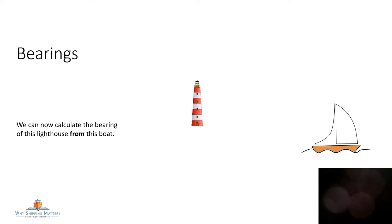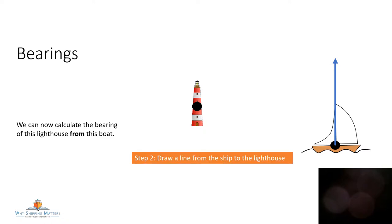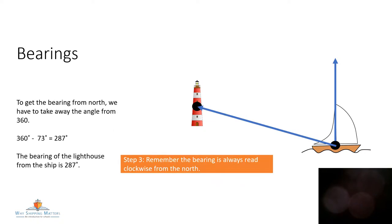Now we can calculate the bearing of this lighthouse from this boat. Remember, the first step is to mark the centre of each shape and draw a line north for the ship. The next step is to draw a line from the ship to the lighthouse. Finally, we can measure the angle. If we go anti-clockwise, it's 73 degrees. So using maths, 360 minus 73 equals 287. The bearing of the lighthouse from the ship is 287 degrees.